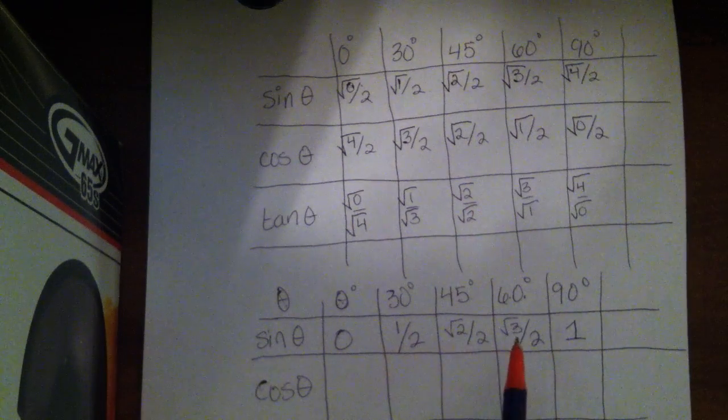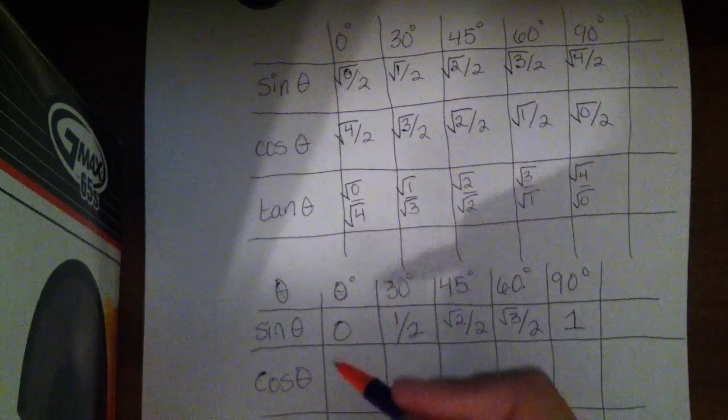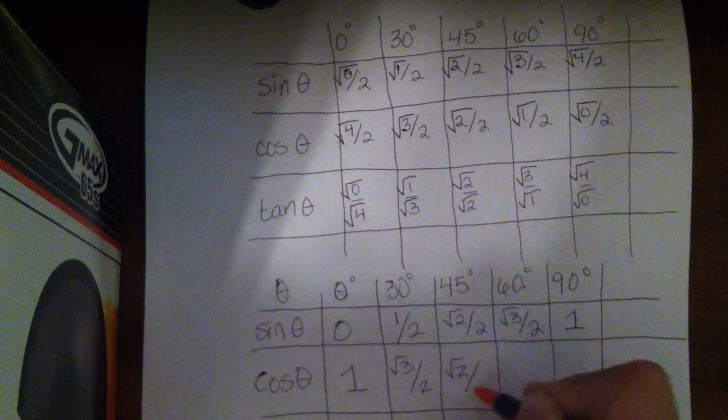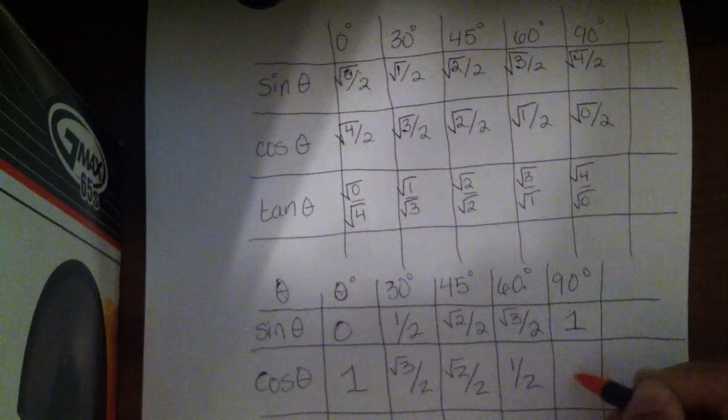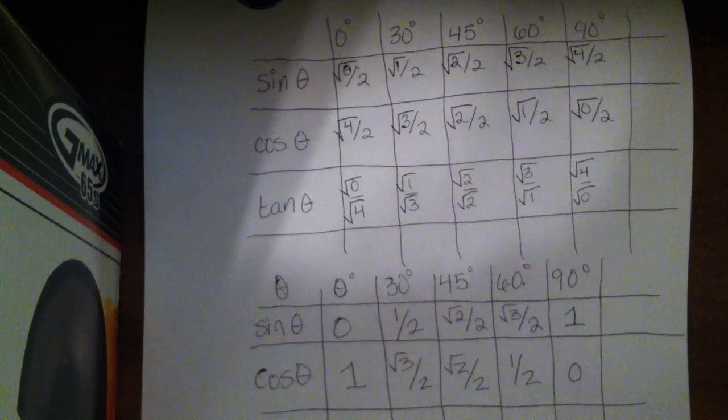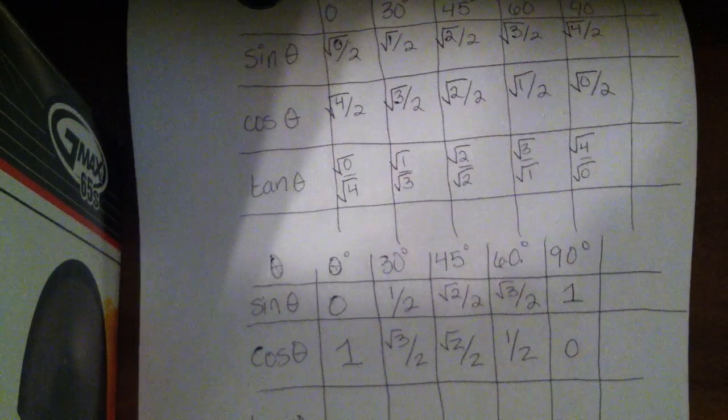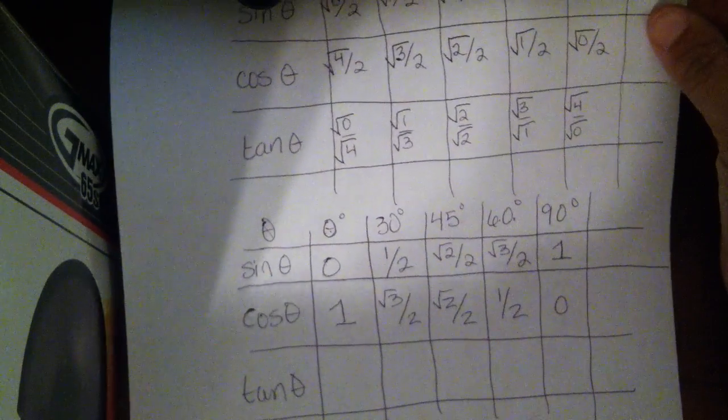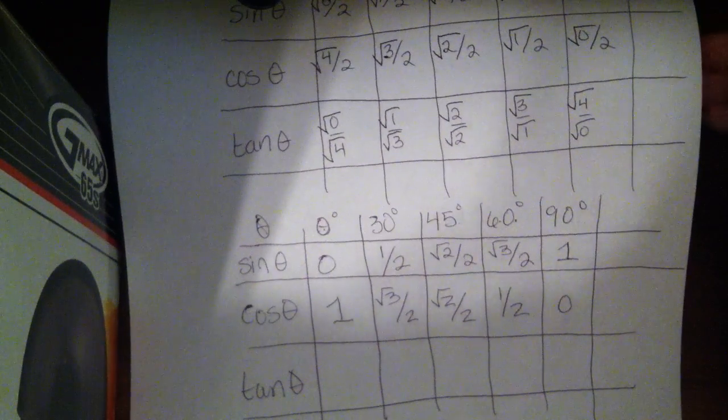So I'm going to repeat these same numbers, I'm just going to do it backwards. So 1, square root of 3 over 2, square root of 2 over 2, a half, and 0. And then for tangent, we need to simplify the values we had just a minute ago, and those are going to be a little bit different.